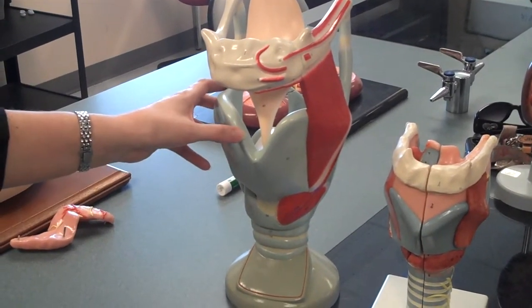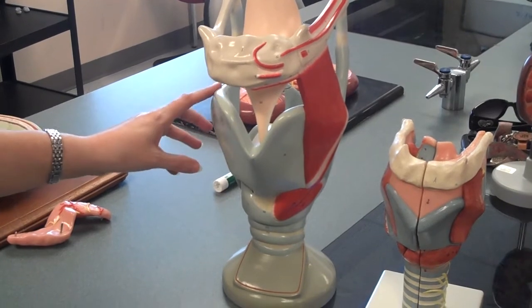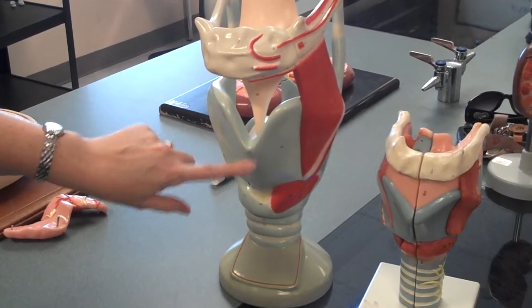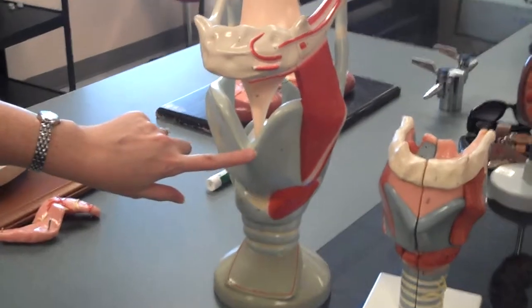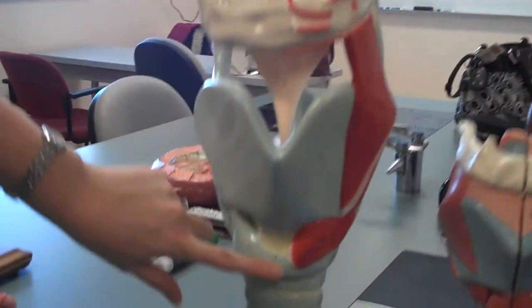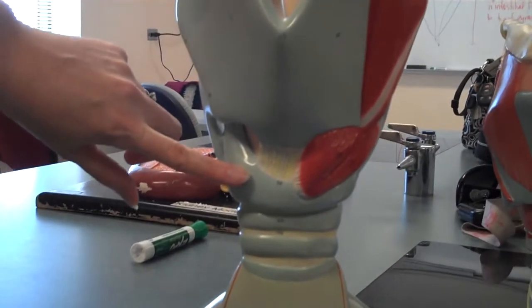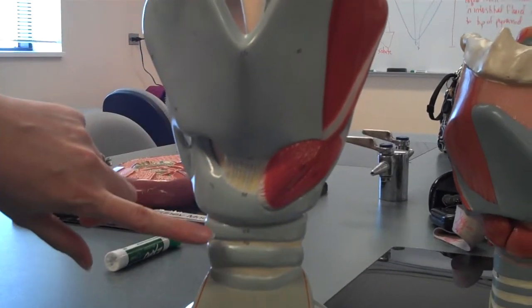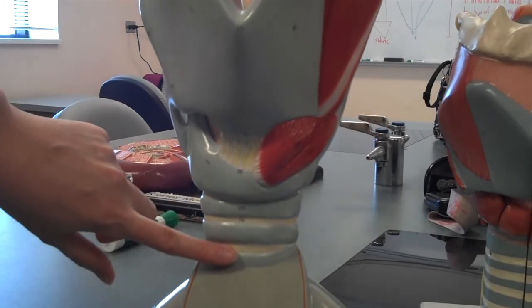The large cartilage of the larynx is called the thyroid cartilage. The laryngeal prominence is known as the Adam's apple, and it's the part that sticks out on the anterior surface. As you go down further, the next major piece of cartilage you get to is the cricoid cartilage, and below that you see the C-shaped rings of the trachea.